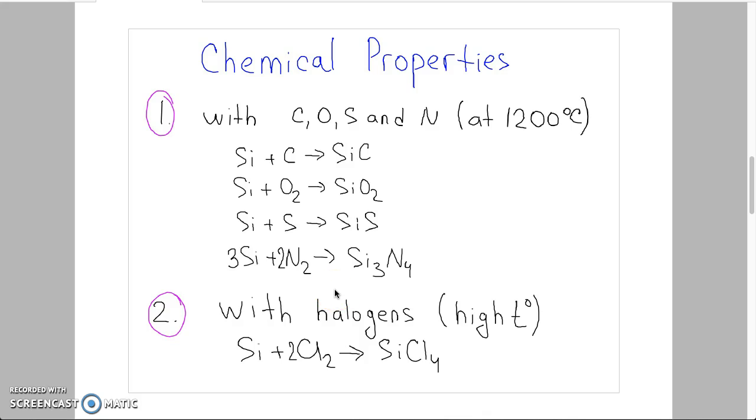Silicon also reacts with halogens at high temperature. Here we can see an example when silicon reacts with chlorine, and in the product we have silicon chloride.